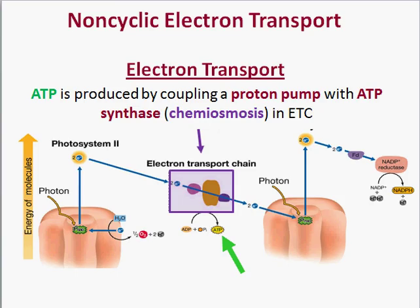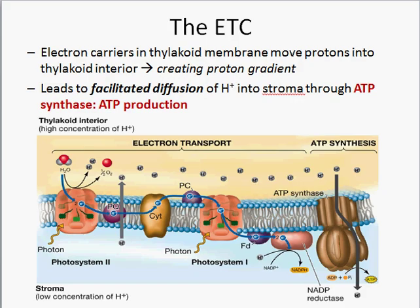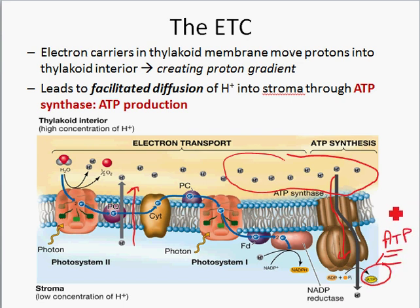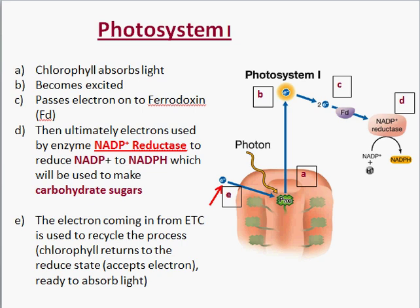The electron transport chain connects photosystem 2 to photosystem 1, and electrons flowing through it generate ATP. The electron from photosystem 2 flows through a series of membrane proteins. As it does, hydrogen ions are pumped out, creating a gradient outside the cell — this is called chemiosmosis. Those protons then flow back in through ATP synthase, generating ATP. This ATP will be used to create sugars in the light independent reactions.